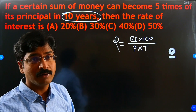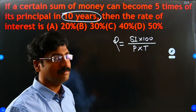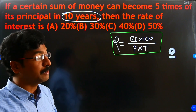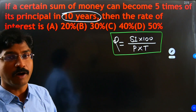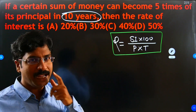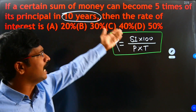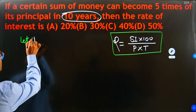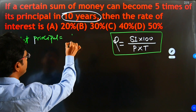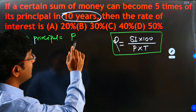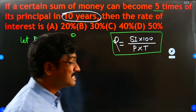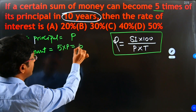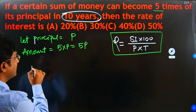Here is the main challenge: without knowing the principal and without knowing SI, how can we find R? We know the formula — R = SI × 100 / (P × T) — but we only know T = 10 years. So let the principal = P. The problem says the amount becomes five times the principal, so Amount = 5P. That means SI = Amount − Principal = 5P − P = 4P.